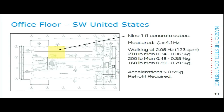We went out and measured — the cubes were there, though they hadn't told me. The measured frequency was 4.1 hertz, somewhere between the bay frequency and the joist frequency. We did walking at 2.05 hertz — one-half of 4.1 hertz — which is 123 steps per minute, within normal walking range. A 200-pound man, a 210-pound man, and a 160-pound man all walked. And look who caused the largest acceleration: the 160-pound man — he was a lawyer and was much better at walking to the metronome than the engineers were.